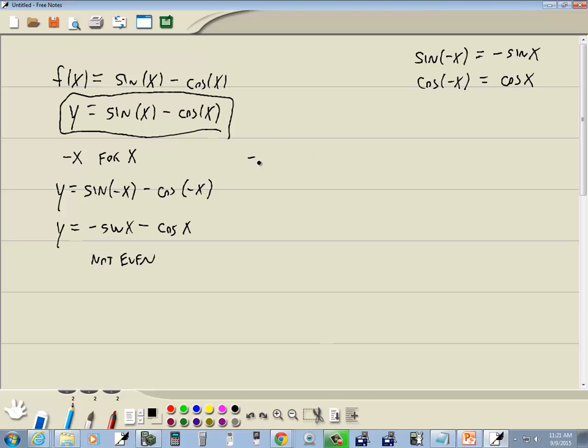Now for the odd. I'm going to do negative x for x, and negative y for y. So let's go ahead and plug that in. Back here to my original function. Put negative y in for y. Put negative x in for x, on both of these.